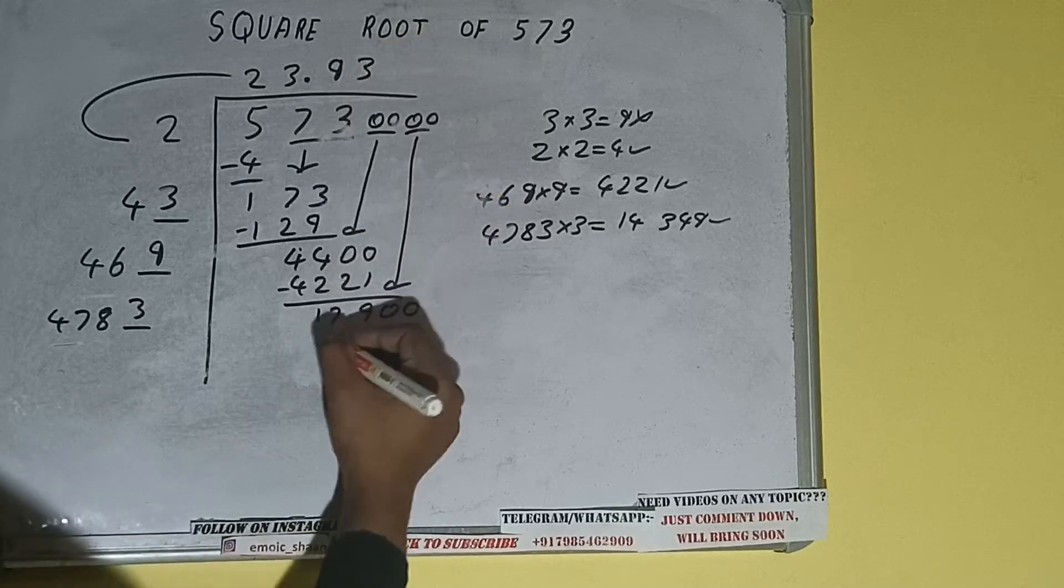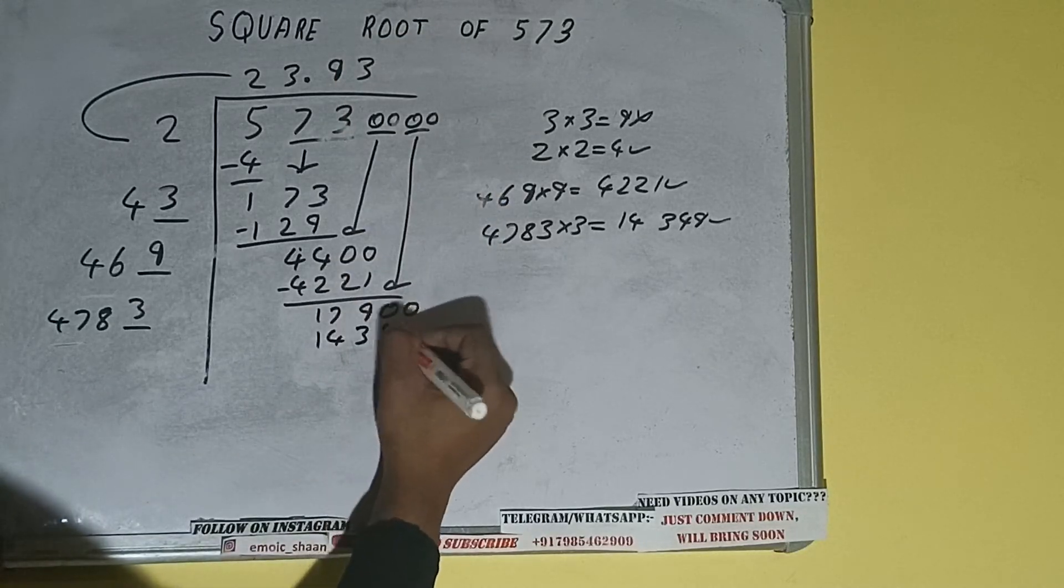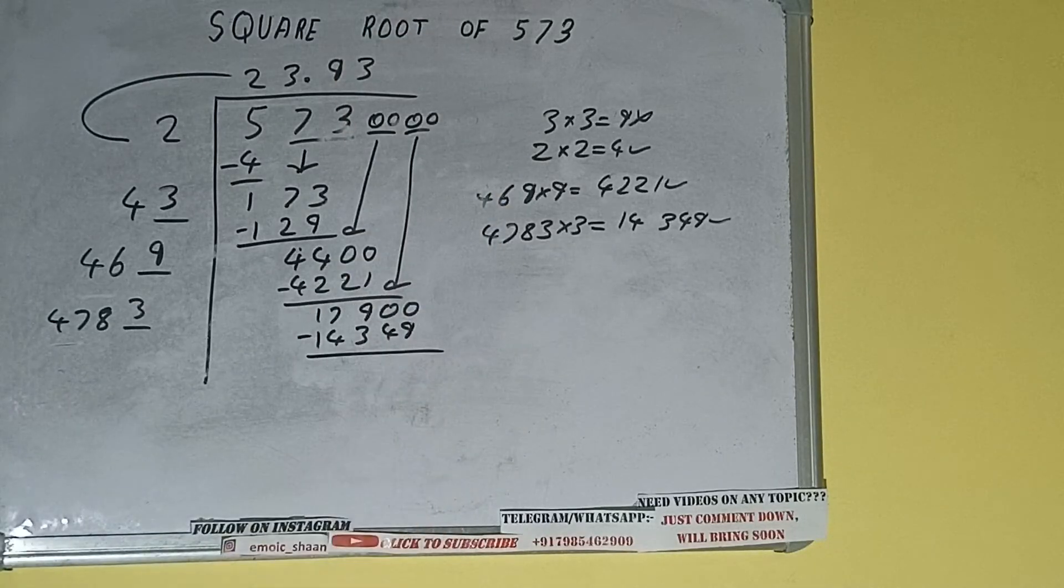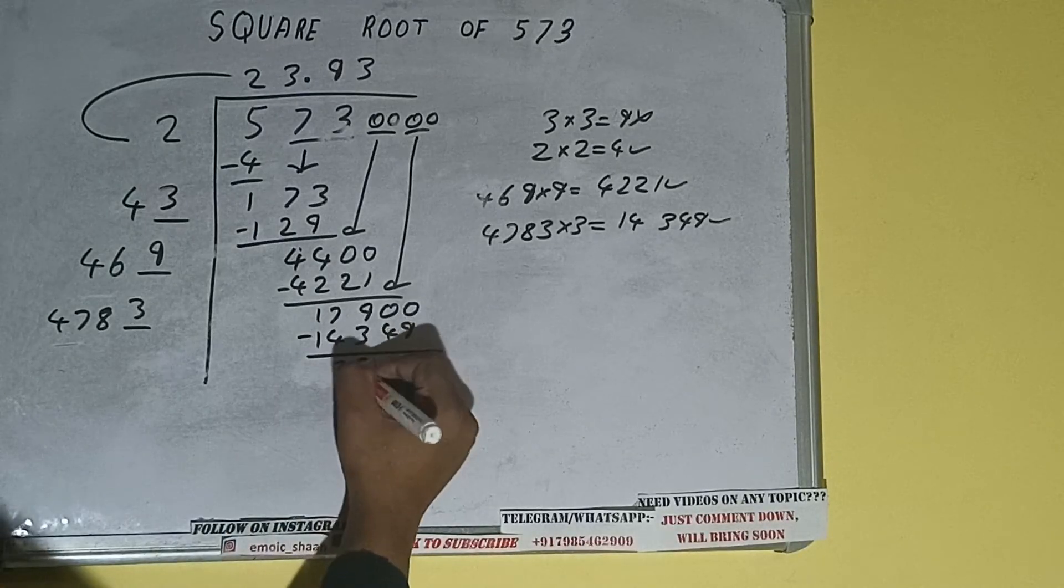And we'll be getting 14349 which is good to take. So 3 here and 3 here, 14349 subtract. And we'll be left with 3551.